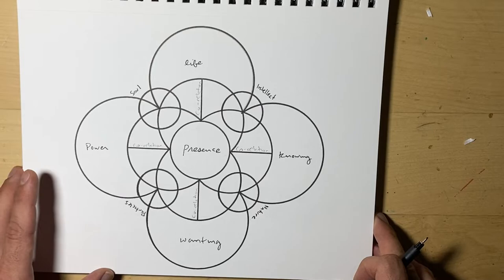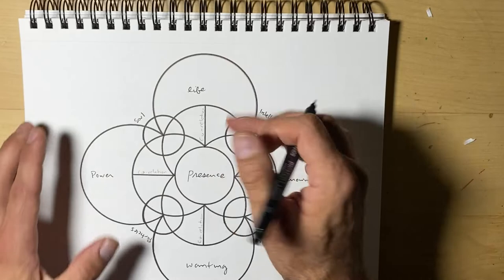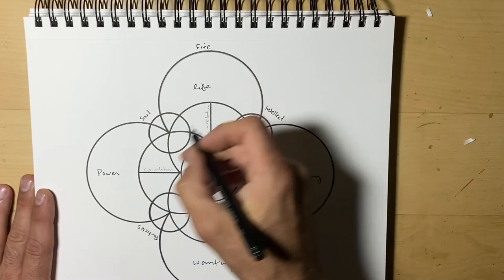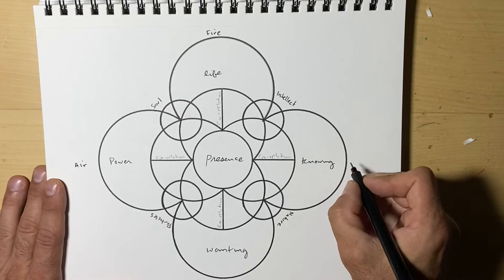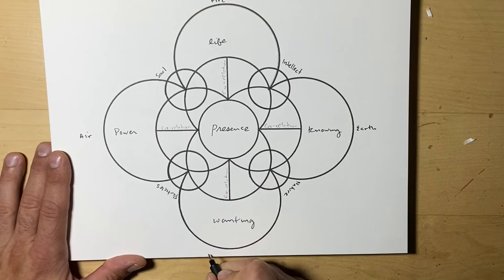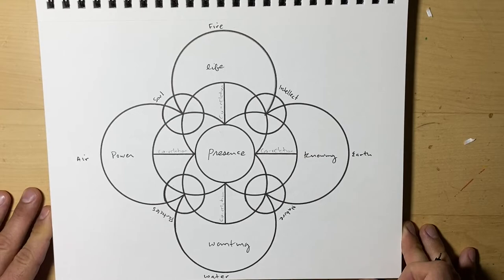And then we have on the outer edges of the circles, on top we have Fire, and the left side we have Air, and the right side we have Earth or dirt, and on the bottom we have Water, which are the four elements, even can be described as the Platonic elements.